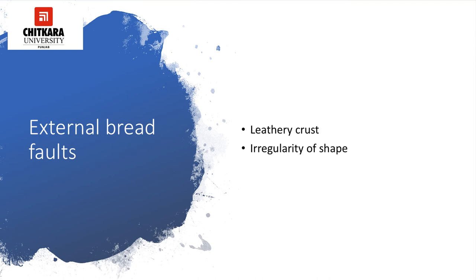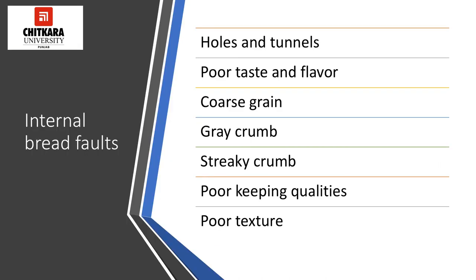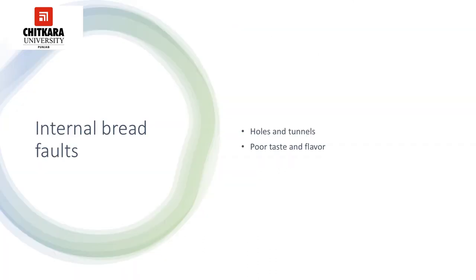Let's now discuss the internal bread faults, which include: holes and tunnels, poor taste and flavor, coarse grain, grey crumb, streaky crumb, poor keeping qualities, and poor texture. The various causes for holes and tunnels include: using very weak or strong flour, too much yeast, too hard fat, too little salt, high amount of chemicals, uneven mixing of raw materials, too slack dough, too much raw flour, very hot oven, and improper processing including knockback, dividing, molding, etc.